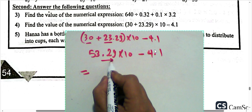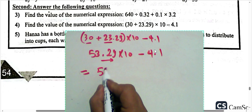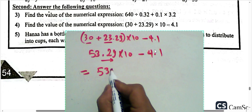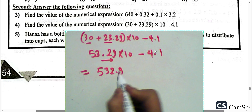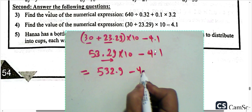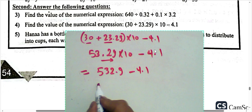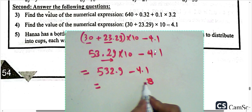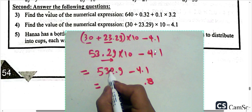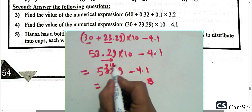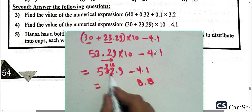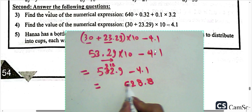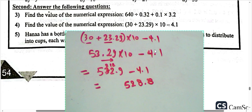Multiply by 10: move the decimal point one place to the right, giving 532.9. Subtract 4.1: 9 minus 1 equals 8; 2 minus 4, borrow so 12 minus 4 equals 8; write 2 and then 5. The result is 528 and 8 tenths.